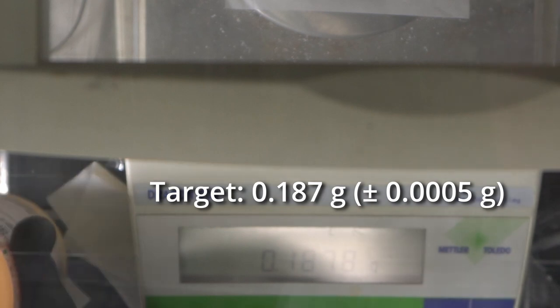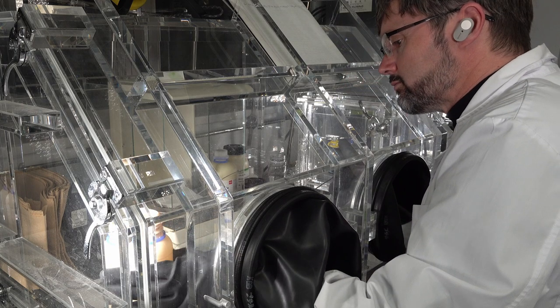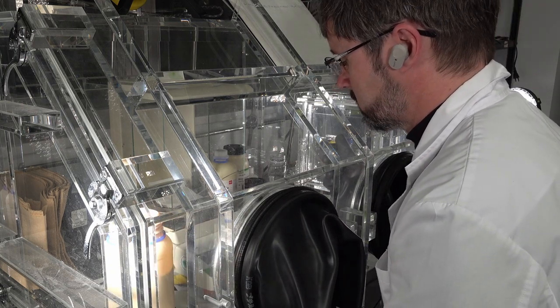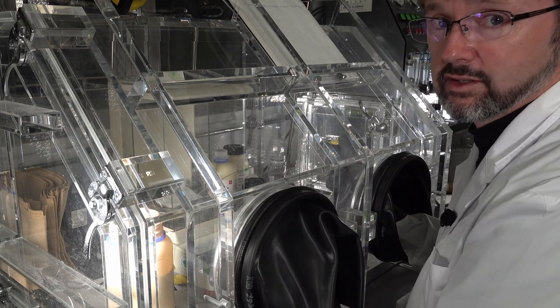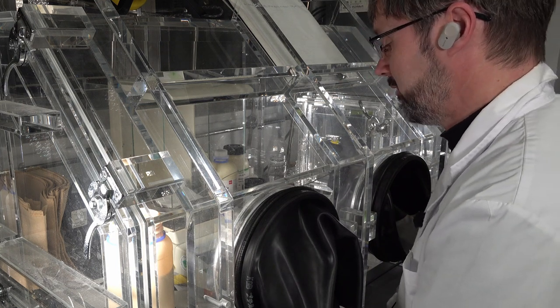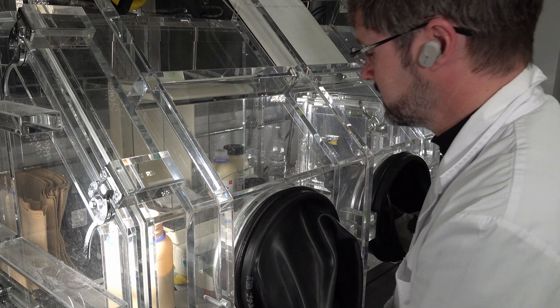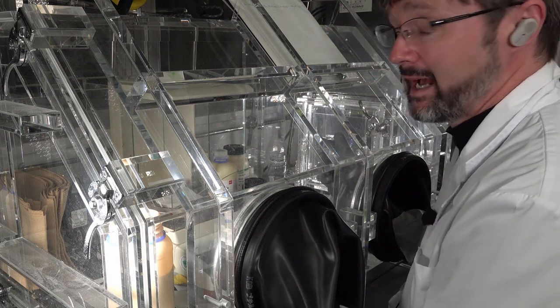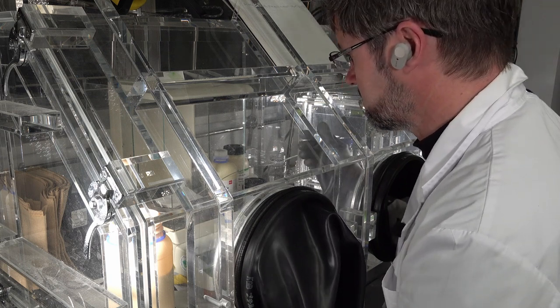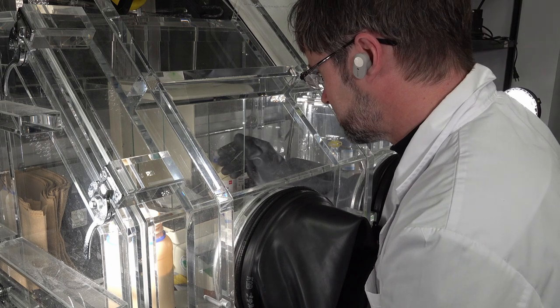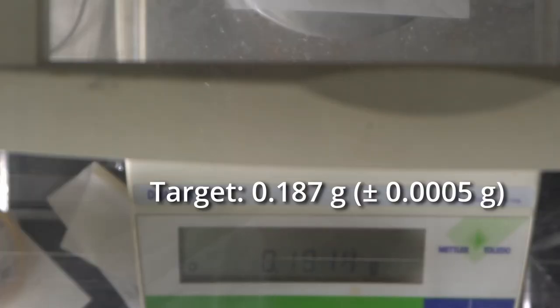Just over now. Golden rule with weighing out chemicals is they don't go back in the jar. If you go over, everything has to go into the waste, and that stops us from contaminating that jar of chemicals. So I've got to take a very small - I'm over by...